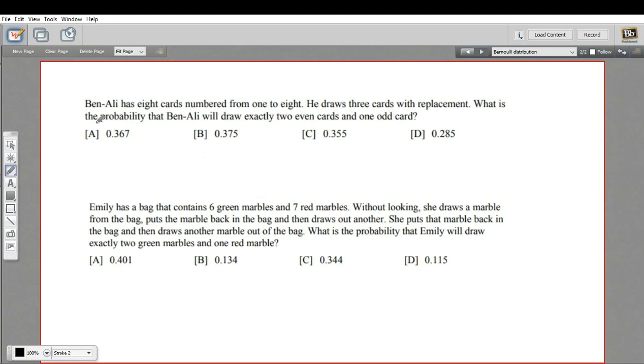For example, in this first problem, Ben Ali has eight cards numbered from one to eight. He draws three cards with replacement. What is the probability that Ben Ali will draw exactly two even cards and one odd card? We'll call the success condition being even and the failure condition being odd. The question is, what's the probability that you get two even and one odd?